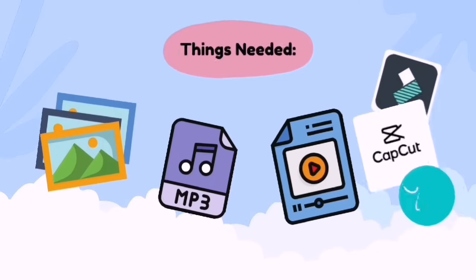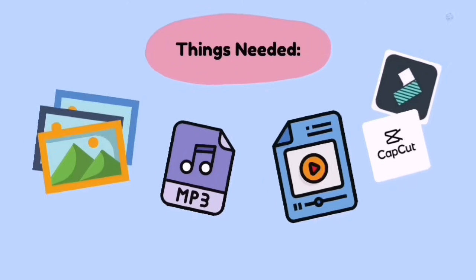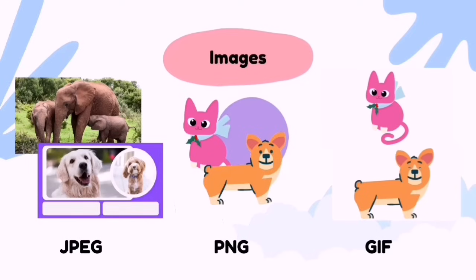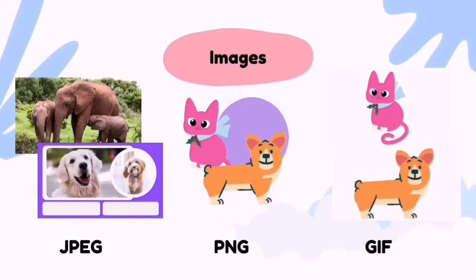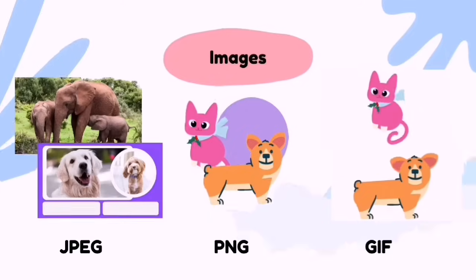Now, here are the things we need: the images, the audio files, the video files, and the editing tools. We have prepared everything and stored them in our Filmora. In this video, we're going to use the JPEG files, which are the still images, the PNG files, which have the transparent background, and the GIFs, which are the animated images.